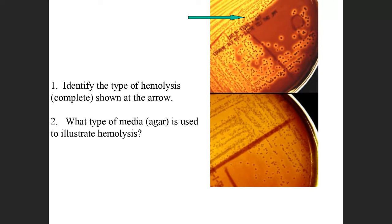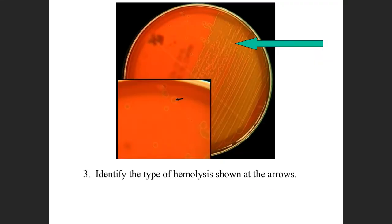What percentage of red blood cells is put into the media? Five percent — very nice. So what type of hemolysis is being looked at here? Alpha, beta, or gamma? Alpha.